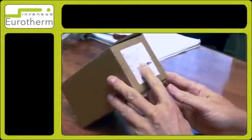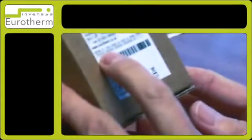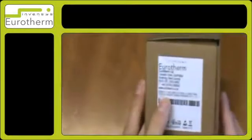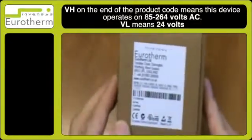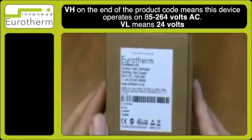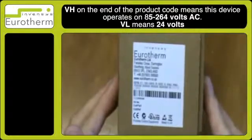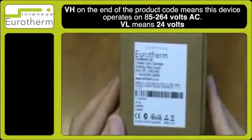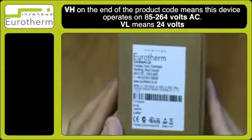Observe the label and you will see a product code. The product code will start something like 3216/CC/VH. Make note of VH - VH is important as it indicates the actual mains supply to the instrument. You can also have VL. VL is 24 volts, but VH is 85 to 264 volts AC.